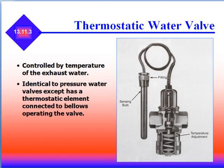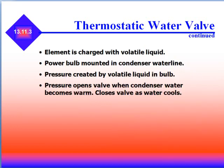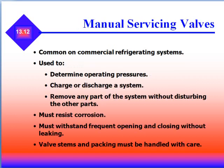Thermostatic water valves are controlled by the temperature of the exhaust water. They are identical to the pressure water valves except they have a thermostatic element connected to the bellows operating the valve. The element is charged with a volatile liquid such as refrigerant. The power bulb is mounted in the condenser water line, and the pressure created by the liquid in the bulb opens the valve when the water becomes too warm and closes the valve as the water cools.